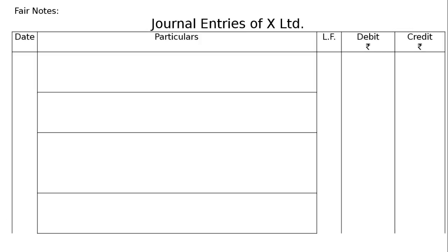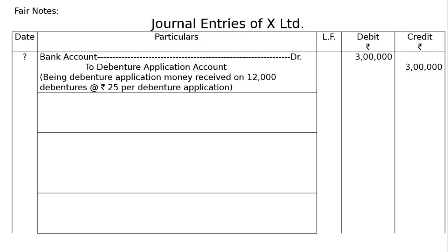First entry: Bank Account debited to Debenture Application Account — being debenture application money received on 12,000 debentures at the rate of ₹25 per debenture. That is 12,000 × ₹25 = ₹3,00,000 debit, ₹3,00,000 credit.